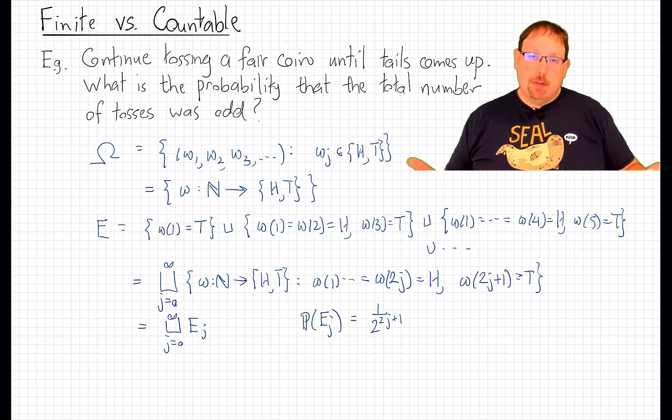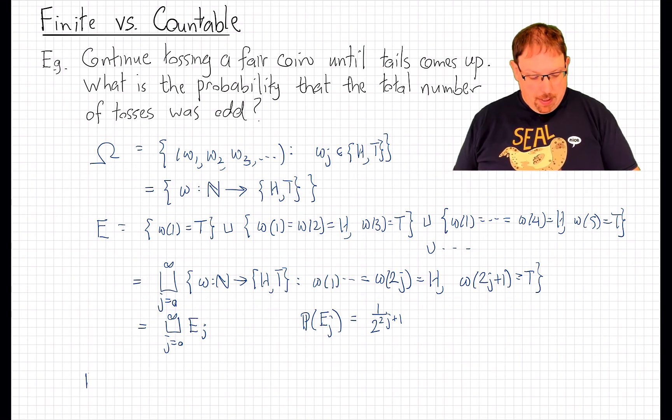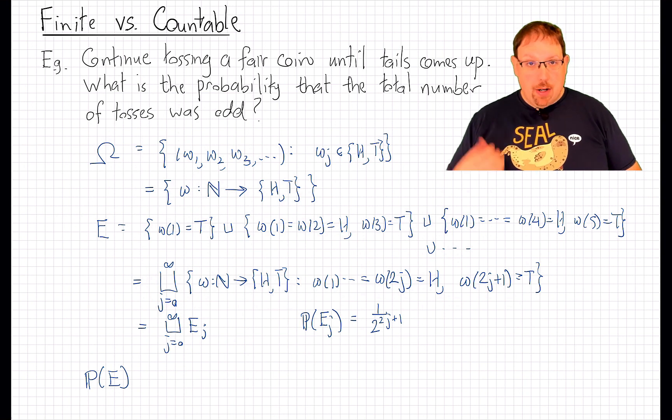Now how does that help us here? We'd like to calculate the probability of the full event E. If this were a finite union, then our intuition tells us that the probability of a union must be the sum of the individual probabilities of disjoint events.